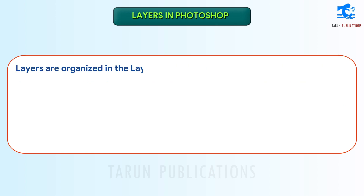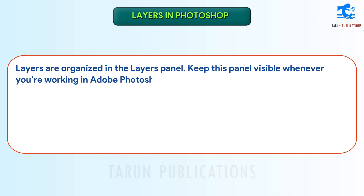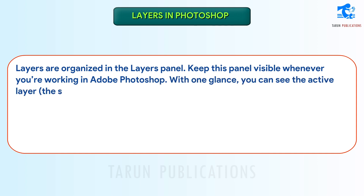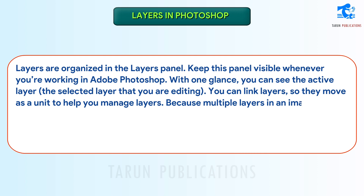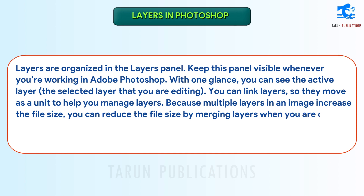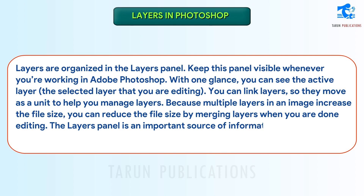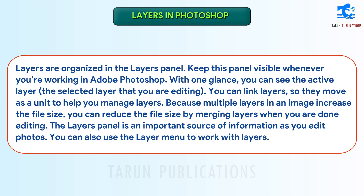Layers are organized in the layers panel. Keep this panel visible whenever you're working in Adobe Photoshop. With one glance, you can see the active layer — the selected layer that you are editing. You can link layers so they move as a unit to help you manage layers. Because multiple layers in an image increase the file size, you can reduce the file size by merging layers when you are done editing. The layers panel is an important source of information as you edit photos. You can also use the layer menu to work with layers.